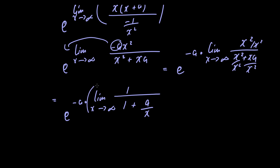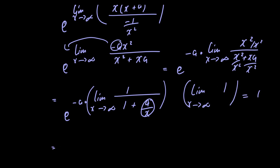If we let x equal infinity, the a over x term is essentially 0, so we have the limit of 1 divided by 1, which equals 1. We're left with e raised to negative a, and that's the final answer. Thank you for watching — I hope you enjoyed the video. If you found this content useful, make sure to like, subscribe, and follow for more. Have a great day!